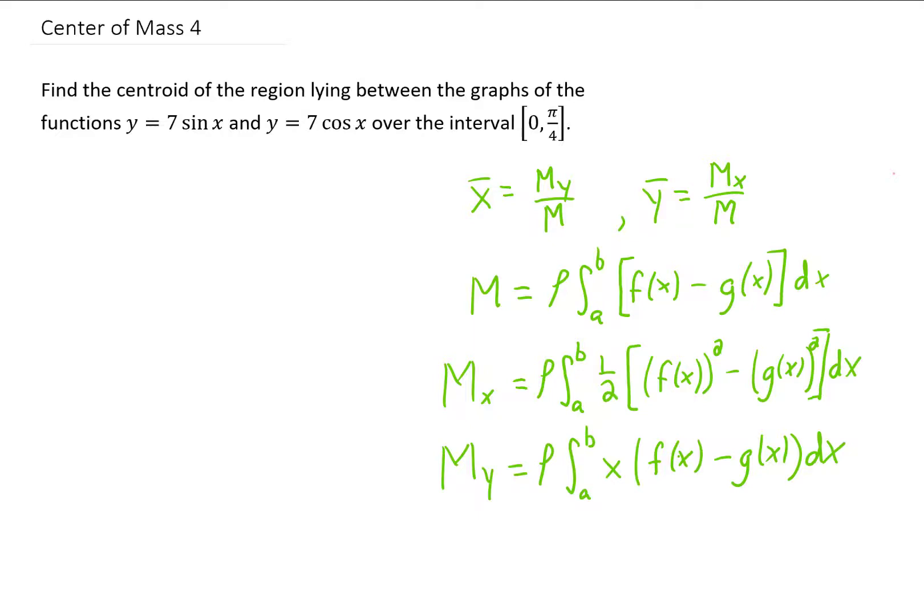All right, we're going to find the centroid or the center of mass of a region lying between the graphs of these two functions on the interval from x equals 0 to pi over 4. And I wrote down a bunch of equations for you. Ultimately, the x-coordinate is given by this right here and the y-coordinate right here.